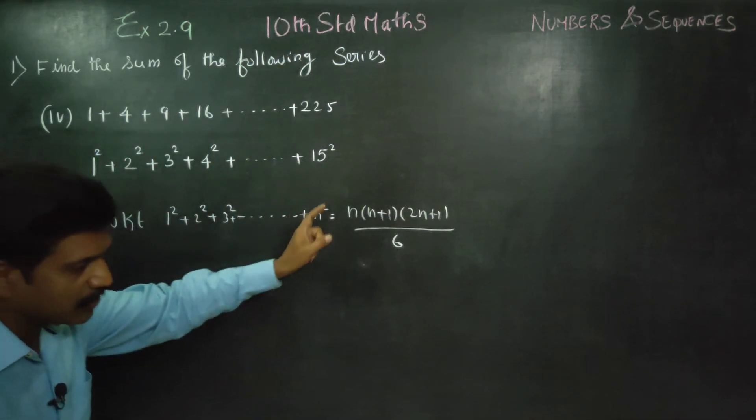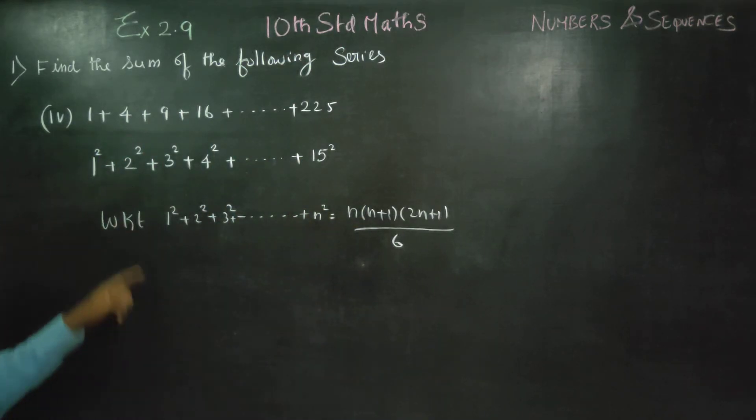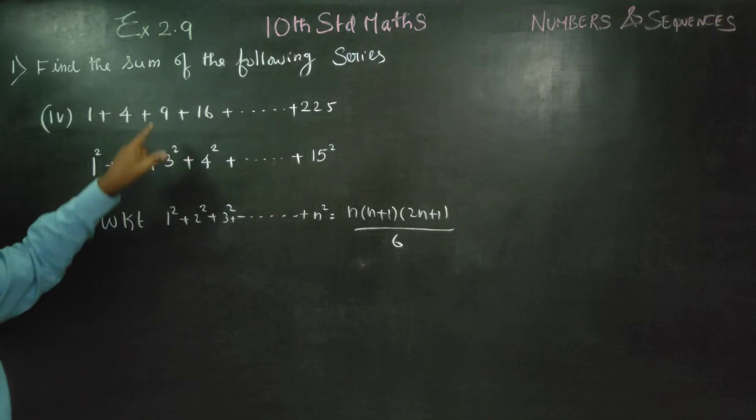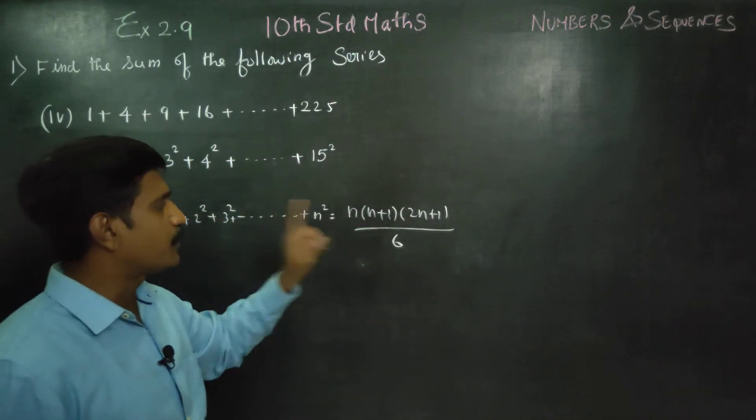Natural numbers, if you square them, it's natural numbers. This formula - it's square: 1 squared, 2 squared, 3 squared. That's why we use this formula.